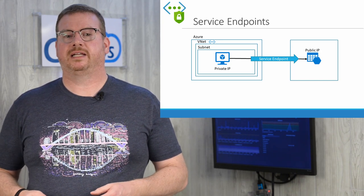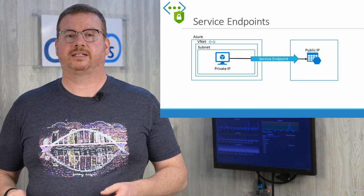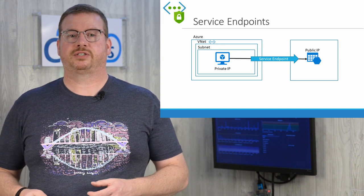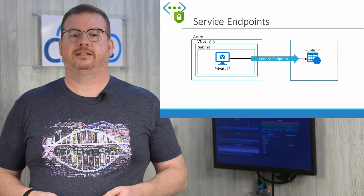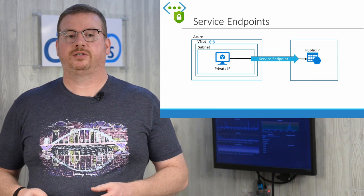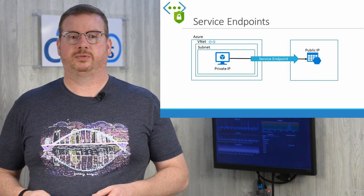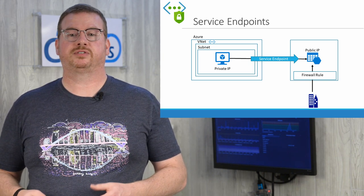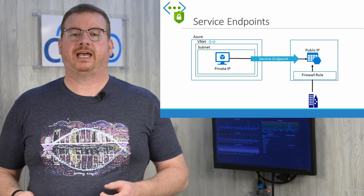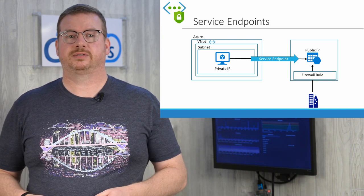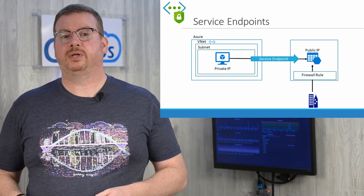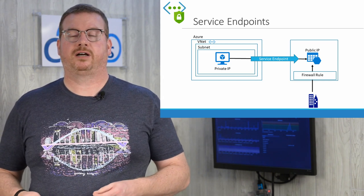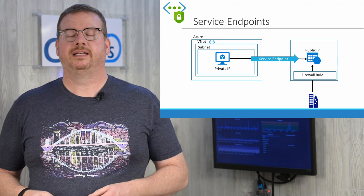Traffic from the subnet can access the storage account by its external IP address. Traffic flows over the Azure network, not the public internet. At that point, all other traffic is blocked to the storage account. There is a firewall for the storage account, so an external IP address or range of addresses can be added to allow access to the resource. If you have ExpressRoute, you can allow the NAT IP address of the ExpressRoute to the firewall to gain access that way.